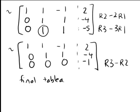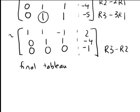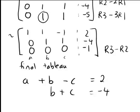So let's write out the resulting equations from this final tableau. The first one, a plus b minus c equals 2, remembering that these columns here represent coefficients of a, b and c. The next one, b plus c equals negative 4. So far so good.